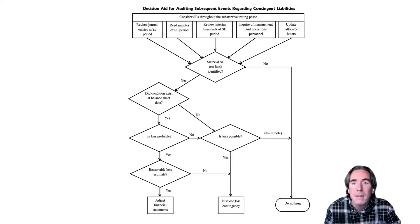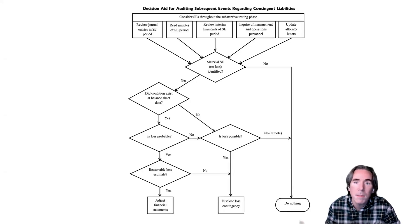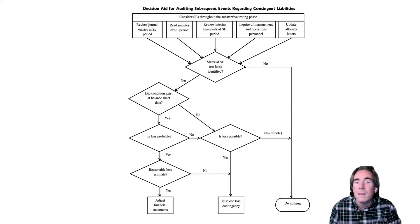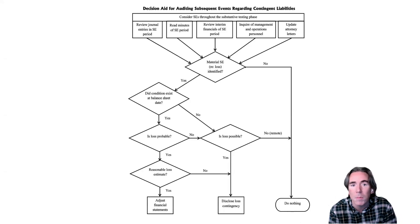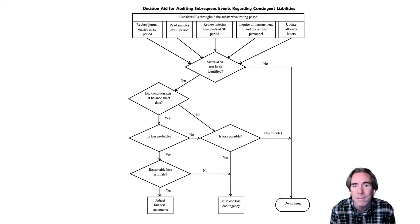When doing subsequent event testing for contingent liabilities, it's sometimes useful to use the decision aid. This decision aid will walk us through all the different steps. We'll observe we first engage in a procedure which will allow us to identify the evidence of a subsequent event contingent liability.